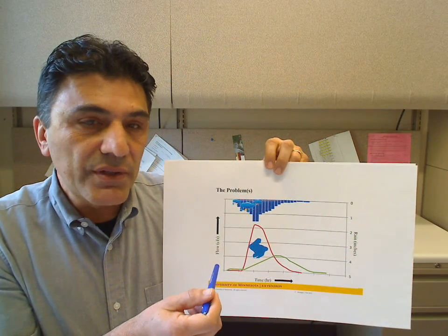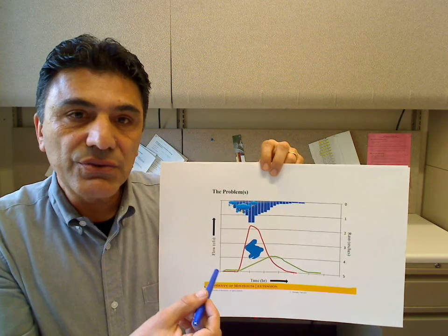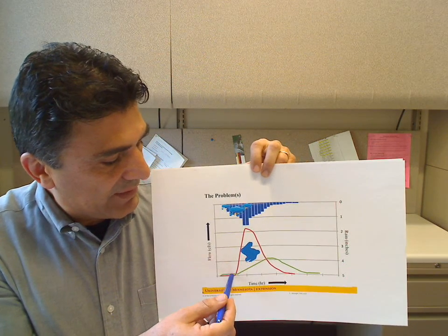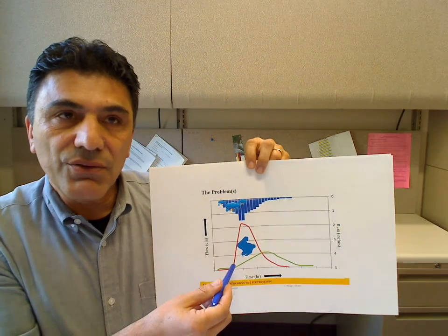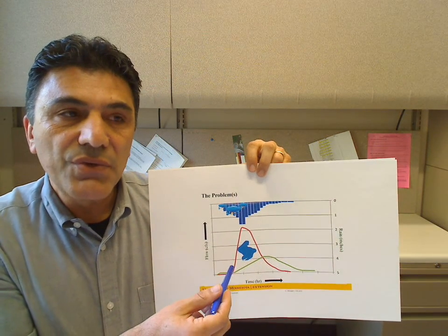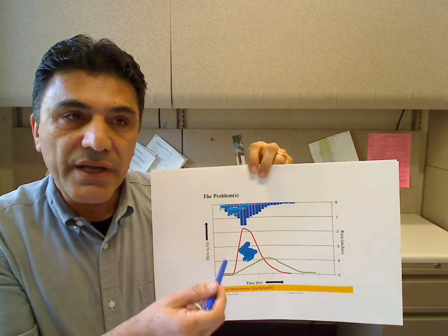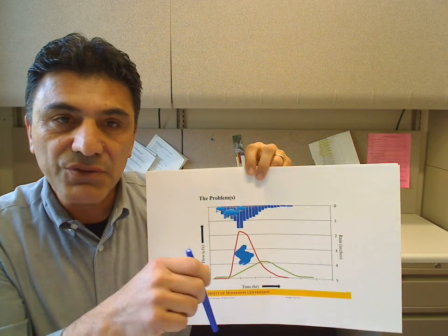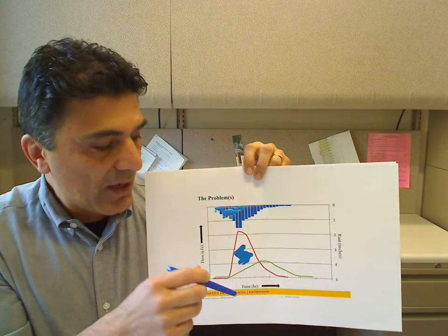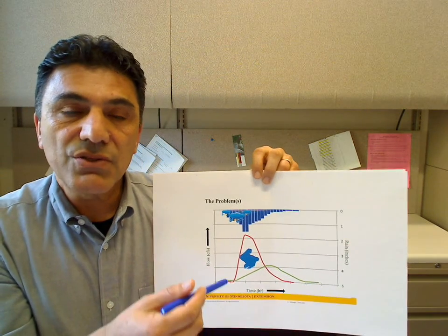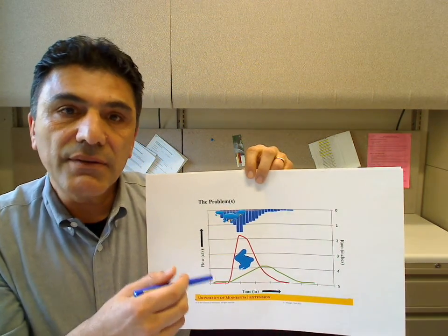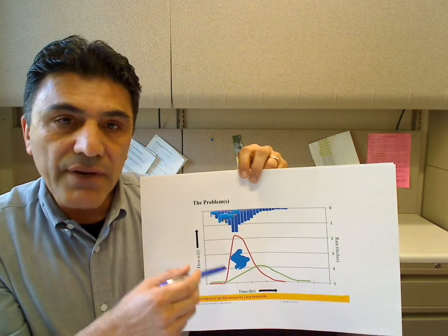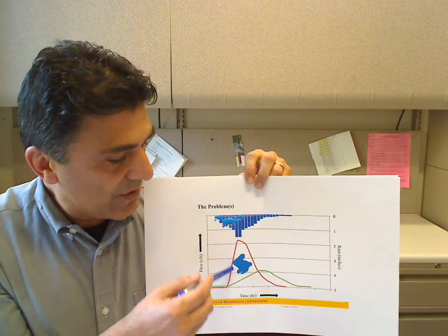That excessive amount is generated when we are on a landscape that is being altered — where we have removed all the pervious areas where rainwater, when it falls on the landscape, can actually infiltrate into the ground — and it has been replaced by hard surfaces where the rain that falls on the landscape really has no place to go and finds its way very rapidly into our creeks and streams.